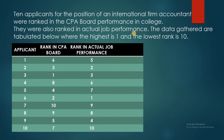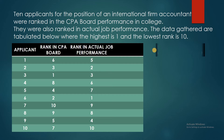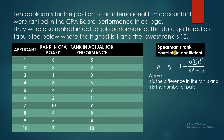Let me show you a clear example. Ten applicants for the position of an international firm accountant were ranked in CPA board performance in college. They were also ranked in actual job performance. The data are tabulated where the highest rank is 1 and the lowest rank is 10. The employers ranked these applicants in their actual job performance and also looked into the CPA ratings, ranking them from highest to lowest. The given data are ranked in CPA board and ranked in actual job performance. The statistical tool we need to use is Spearman's rank correlation coefficient.